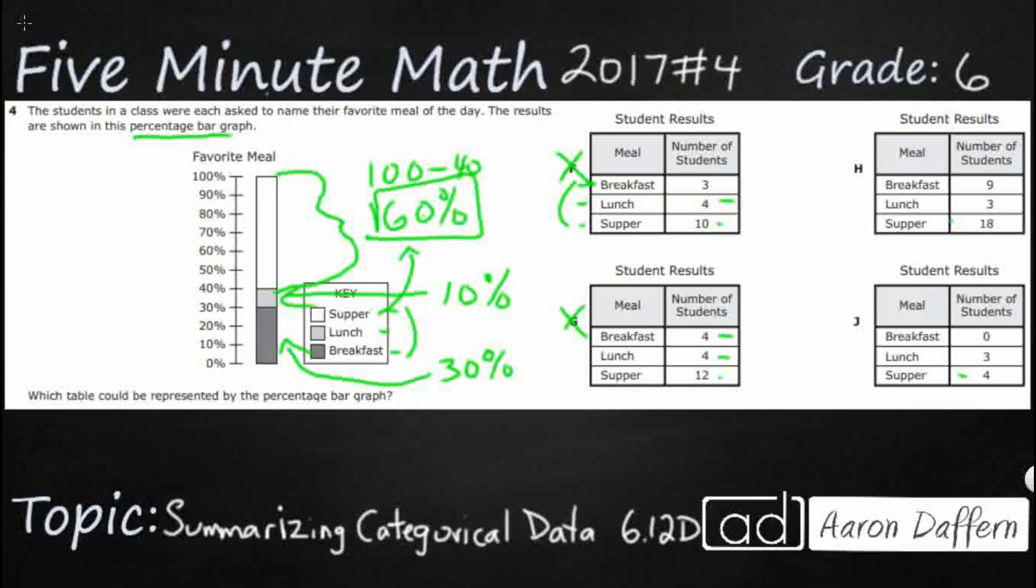Lunch is smaller on H. That's good. And then lunch is larger than breakfast. Breakfast has got zero. That doesn't make any sense. Breakfast has got 30. So look, I've already eliminated three answer choices and I'm pretty sure the answer is H.